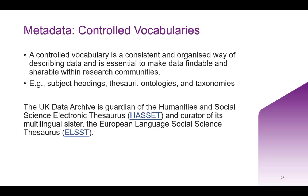In addition to the DDI structure of the metadata for our catalog pages, we also subscribe to controlled vocabularies. You'll notice on the catalog pages we also have topics and keywords that you can use to search for related data. These are not just free text fields — these are from controlled vocabularies. The UK Data Archive is the guardian of the humanities and social sciences electronic thesaurus, and a multilingual version, the European language social science thesaurus. There are a number of these vocabularies, which are usually discipline-specific.